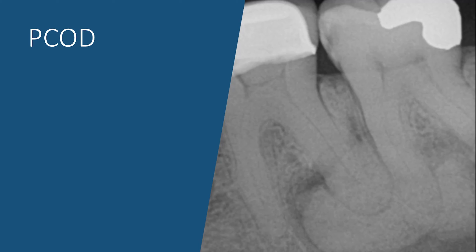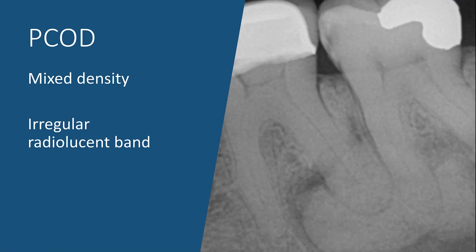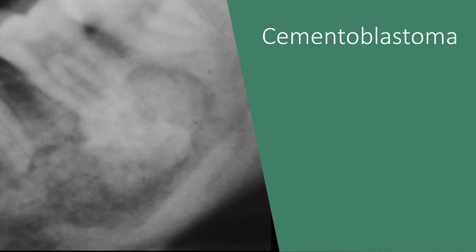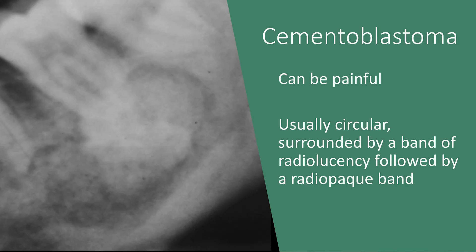Periapical cemento-osseous dysplasia is also easy to identify. In the later stages, there are irregular radiopacities surrounded by an irregular band of radiolucency. It is most common in middle-aged females of African heritage. We had also discussed cementoblastoma — a cementoblastoma can be painful, usually circular, surrounded by a band of radiolucency followed by a radiopaque band, and the roots may be resorbed.